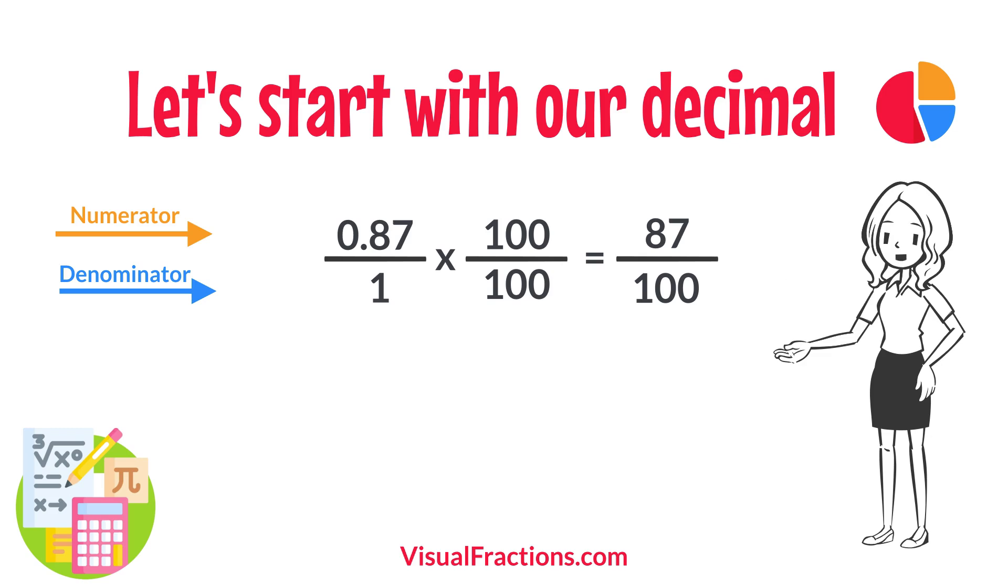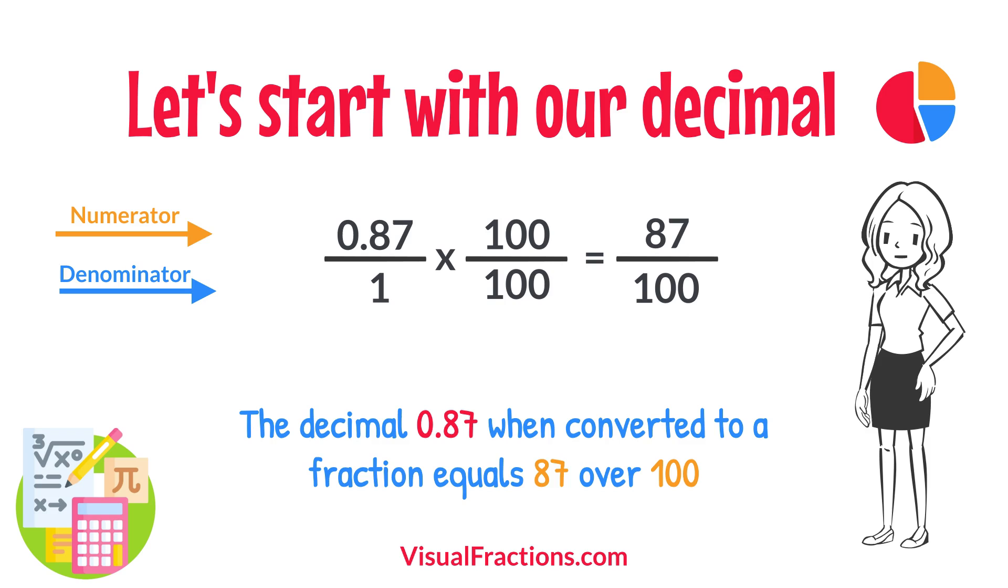And there you have it. The decimal 0.87 when converted to a fraction equals 87 one hundredths. This fraction is in its simplest form and cannot be further simplified.